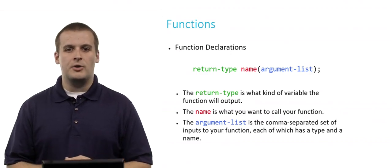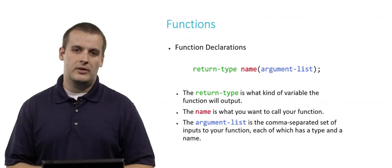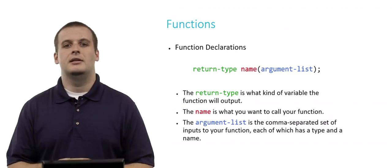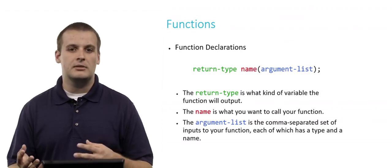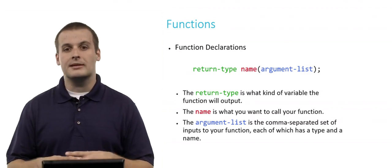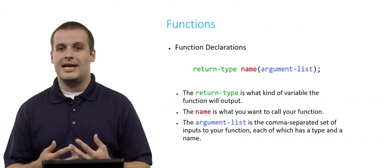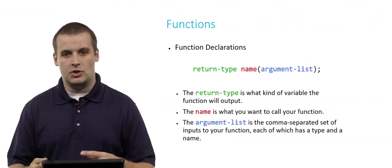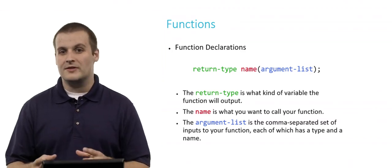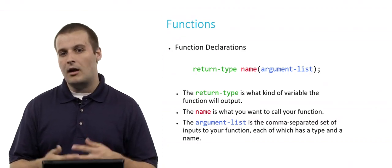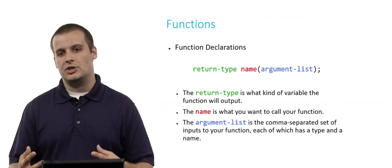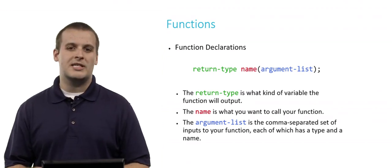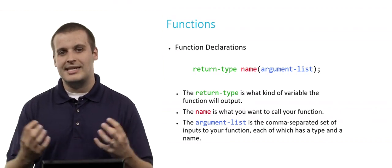There are three parts to a function declaration: return type, name, and argument list. The return type is what kind of variable the function will output. For example, if we multiply an integer by an integer, the output will probably be an integer, so the return type would be int. Name is what you want to call your function — it's actually one of the most important parts in terms of knowing what the function does. Argument list is the comma-separated list of all inputs, each of which has a type and a name.